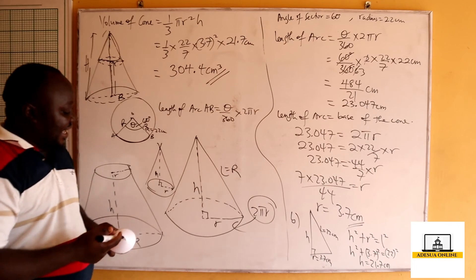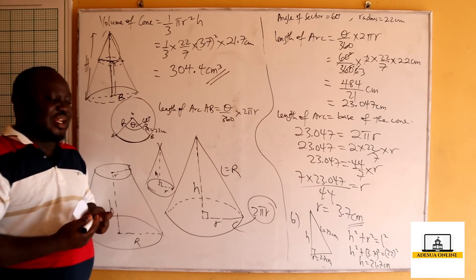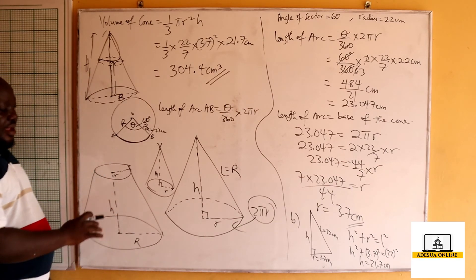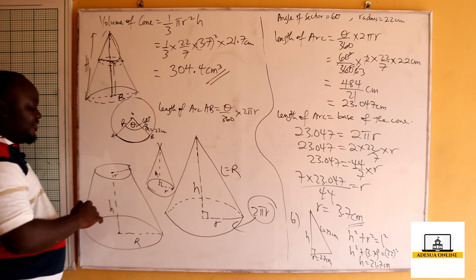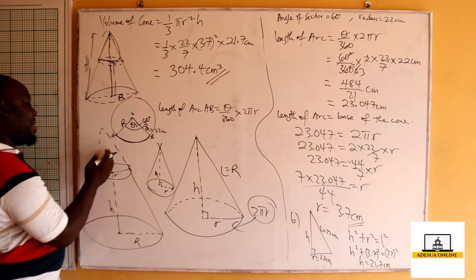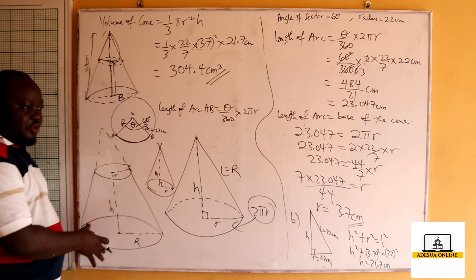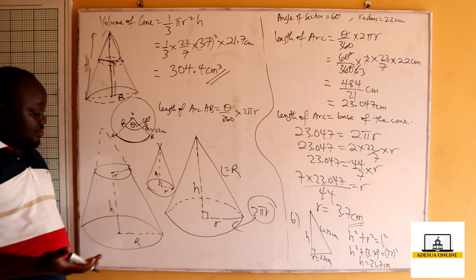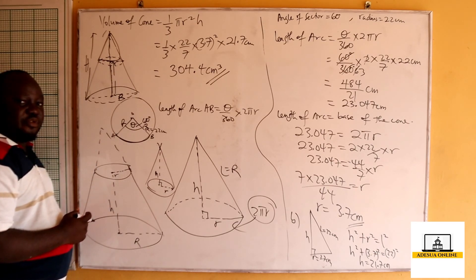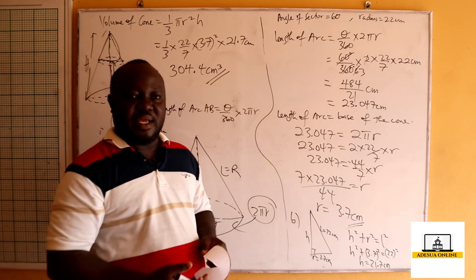A frustum is a cone whose upper part has been cut off. To find the curved surface area of the frustum, take the curved surface area of the whole cone minus the curved surface area of the upper cut-off cone. Similarly, the volume of the frustum equals the volume of the whole cone minus the volume of the upper cut-off part. That gives you the volume of the remaining frustum.